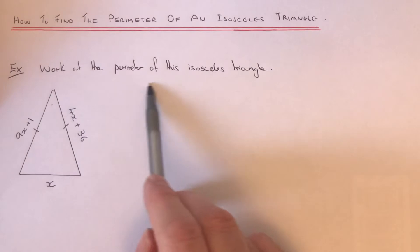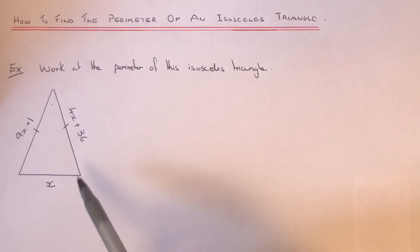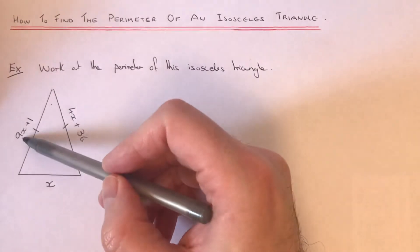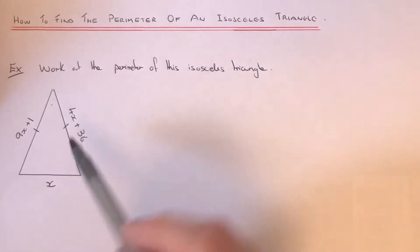Okay, so we're going to work out the perimeter of this isosceles triangle. So we've got two sides as 9x plus 1 and 4x plus 36, and the bottom edge is x centimeters long.